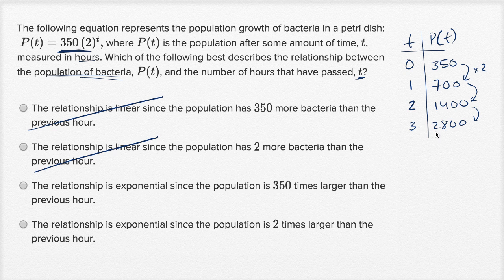The relationship is exponential. Yep, that's what it looks like. Since the population is 350 times larger than the previous hour. No, no, no. It's not 350 times larger, it's two times larger. So to get 350 times larger, it would be 350 that you would be raising to the exponent. So we're gonna rule that one out.